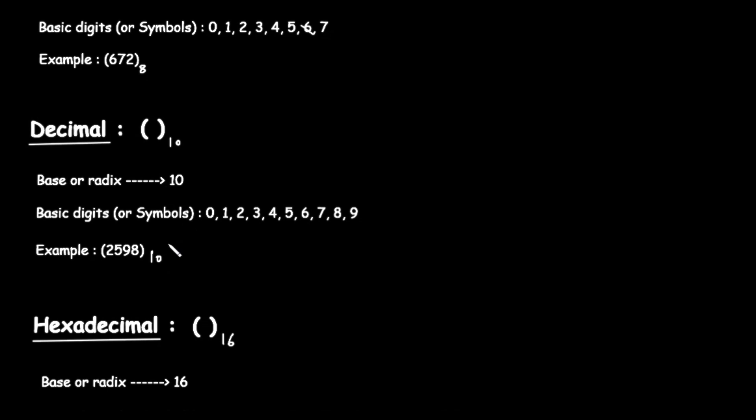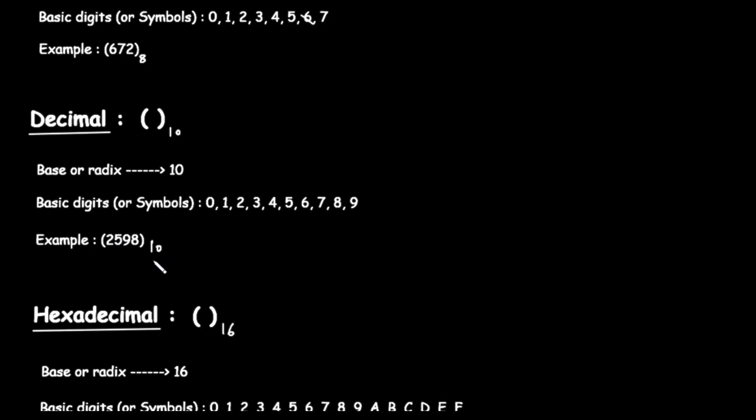These are the digits we learned as children: 0, 1, 2, 3, 4, 5, 6, 7, 8, and 9. With these 10 digits, we can represent any number imaginable. The example provided is 2,598 in base 10. All the digits—2, 5, 9, and 8—are part of our standard set of 10 digits.